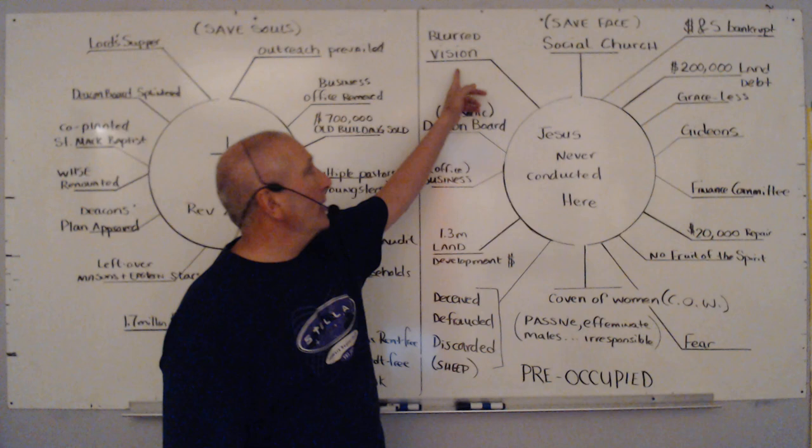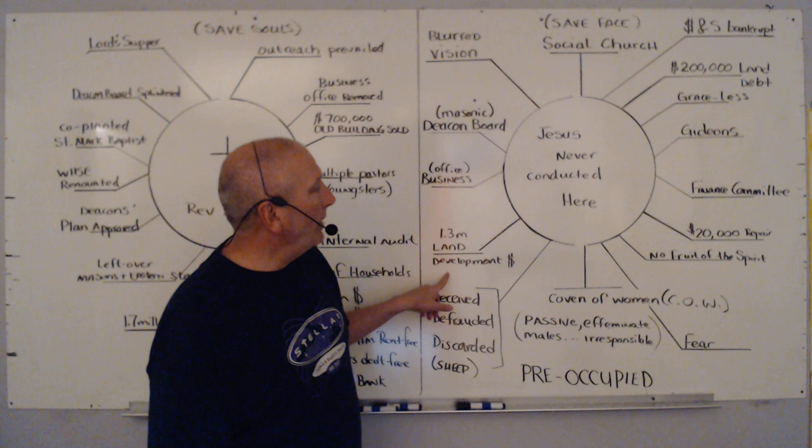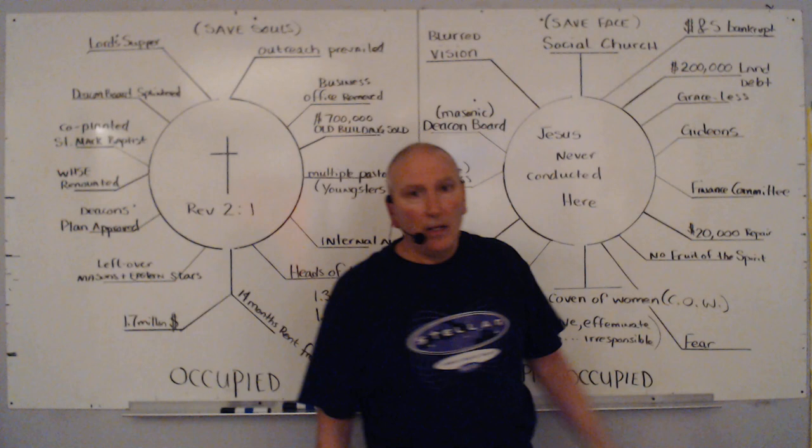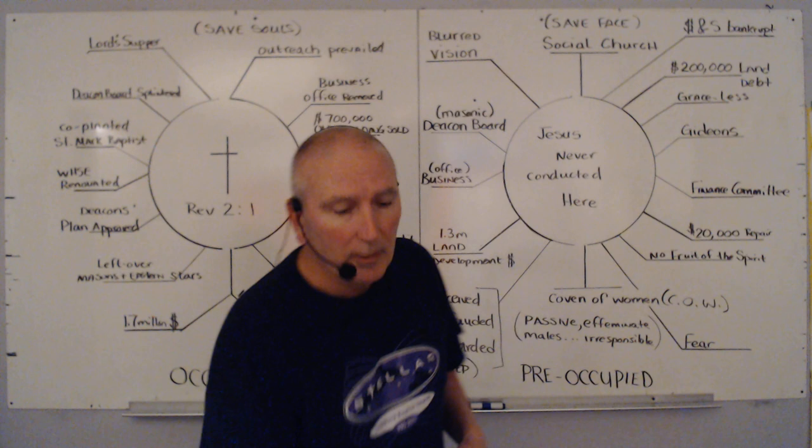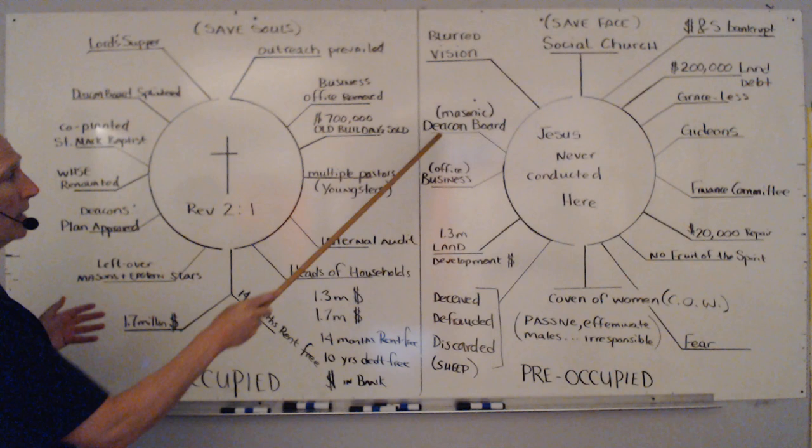His vision became blurred. Information about the land that was acquired under him was not yet disclosed: a $1.3 million developmental cost liability, $200,000 land debt remained, and a $20,000 repair bill on just the building. But the church doesn't have a problem. Jesus said 'be occupied till he comes.' We were about saving souls; they were about saving face.